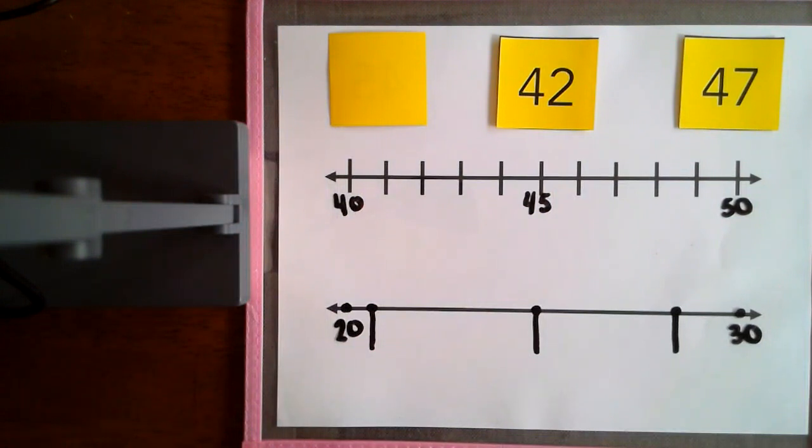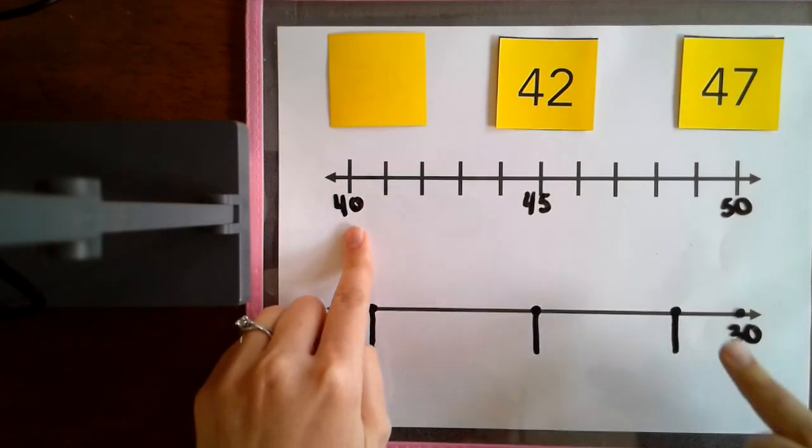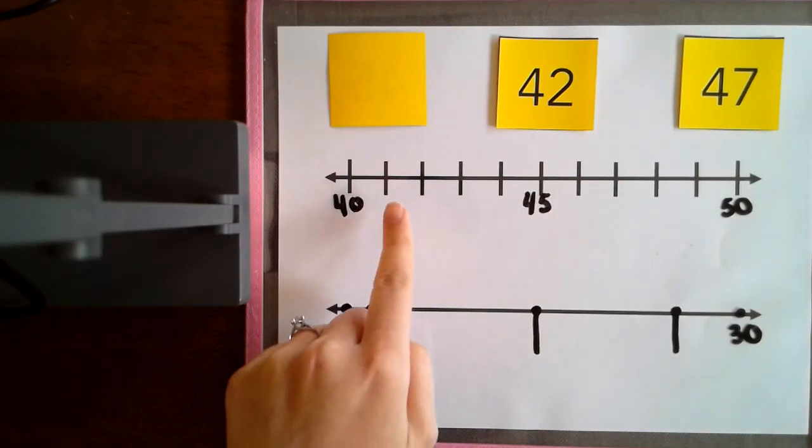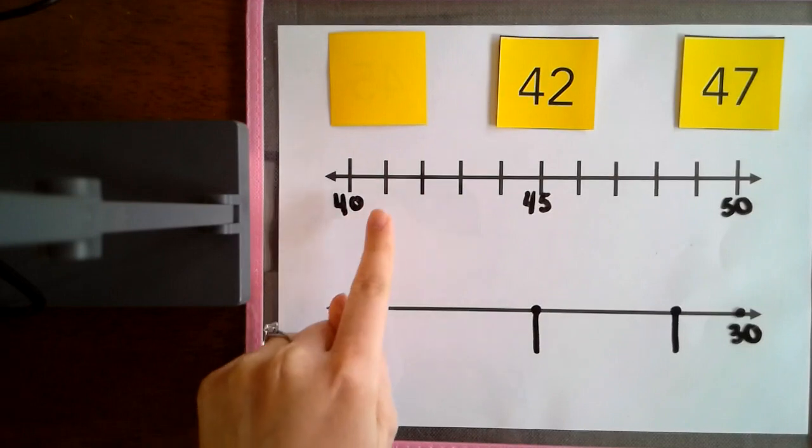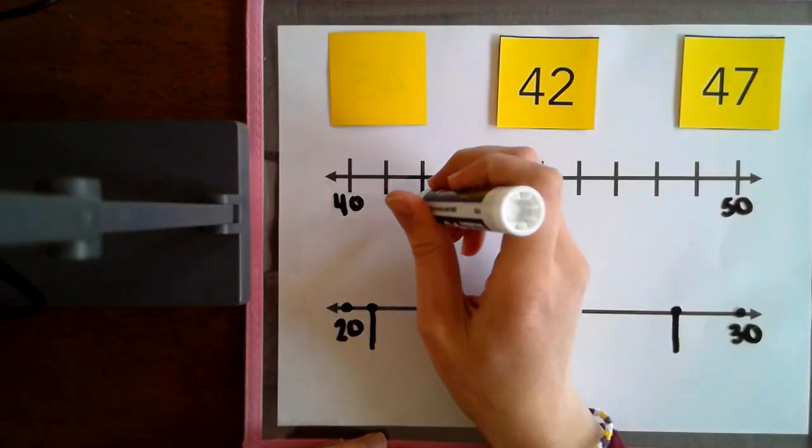Our next number is 42. 42 is less than 45, so 42 is closer to 40 than it would be to 50. Again, I could count each of these lines to help me find it. So we have 40, 41, 42. And that is closer to 40.